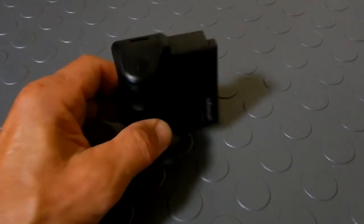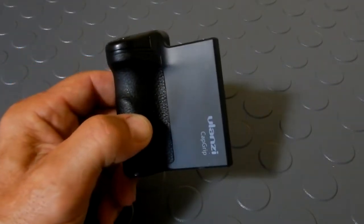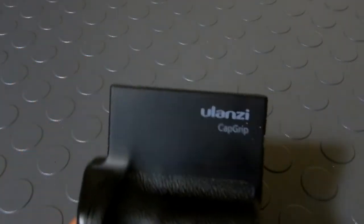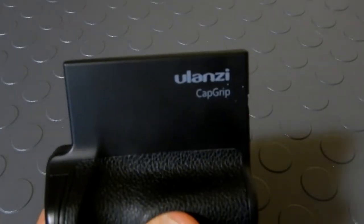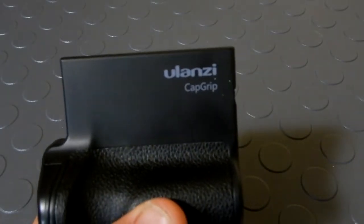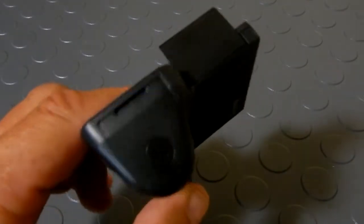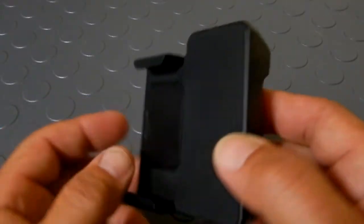Today I want to take a look at a really cool little item that I bought recently off of Amazon. The manufacturer is Ulanzi, it's called a cat grip. It's a neat little item here.